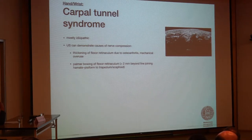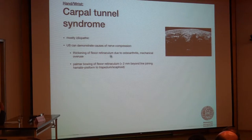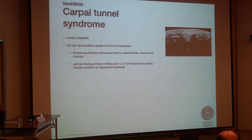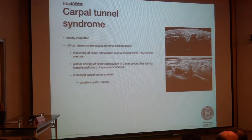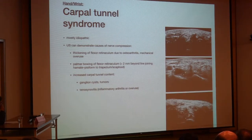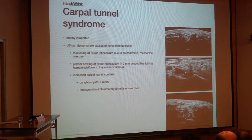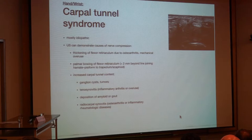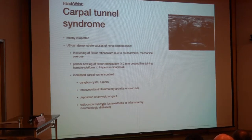Mostly CTS is idiopathic. However, in many cases, ultrasound can demonstrate different causes of nerve compression. There might be thickening of the flexor retinaculum due to osteoarthritis or mechanical overuse, with bulging of more than 2 mm being indicative for CTS. There may also be increased carpal tunnel content due to ganglia coming mainly from the radiocarpal joint or tumors, as well as tenosynovitis around the flexor tendons. Deposition of crystals like gout or amyloid, and radiocarpal synovitis, should also be treated when injecting the carpal tunnel.